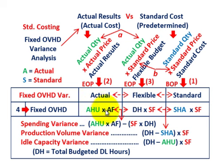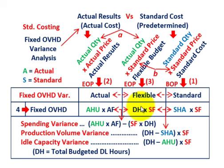The actual amount is actual hours times the actual fixed overhead rate. For our flexible amount, that's taking the denominator hours times the standard fixed rate we've established. The denominator hours are the total direct labor hours we have budgeted for our fixed overhead — what we base our fixed overhead rate on for the period.